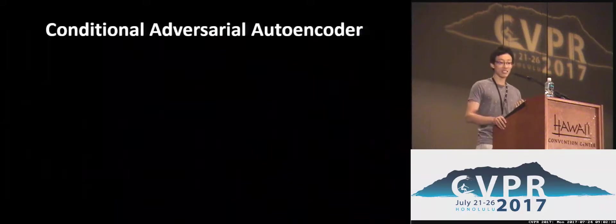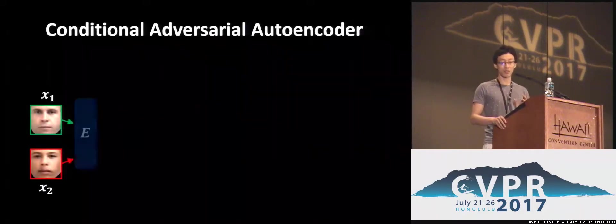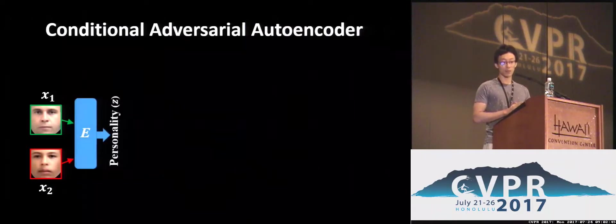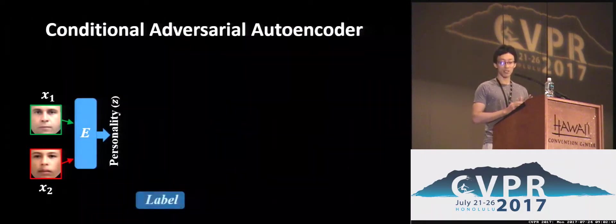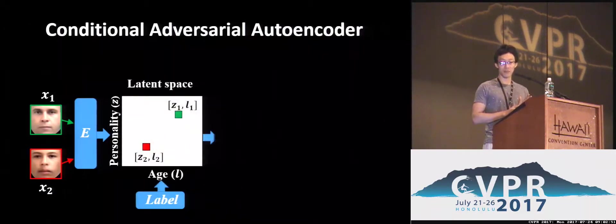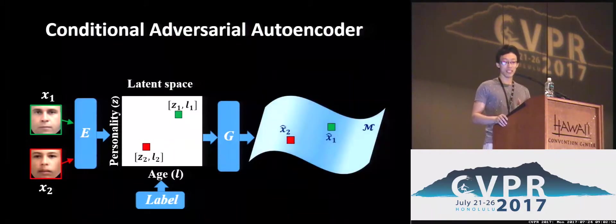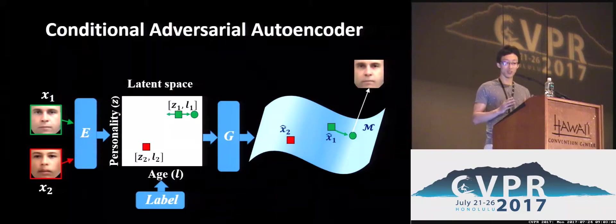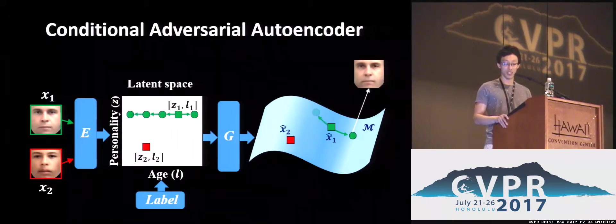This idea is realized by the conditional adversarial autoencoder. Given the input images, through the encoder E, we get the personality features. Conditioned on the label age, we get the feature in the latent space. Then through the generator G, we map the latent feature onto the manifold. In the latent space, the traversing is linear, corresponding to a nonlinear path on the manifold. The mapping between the linear and nonlinear paths is learned by the generator G.